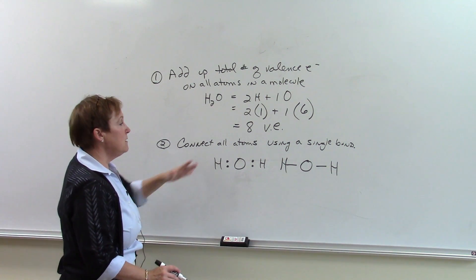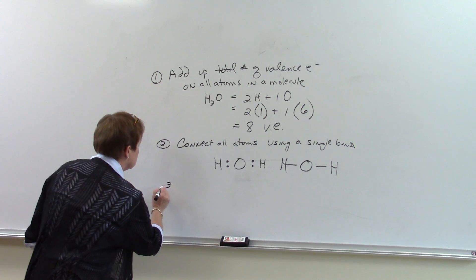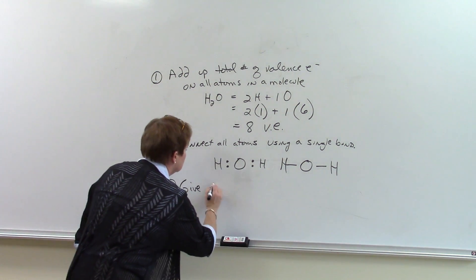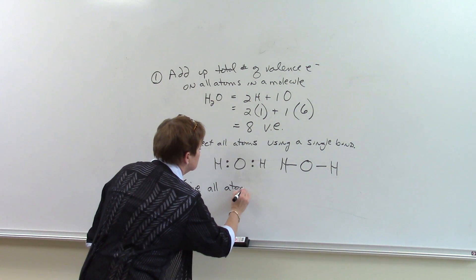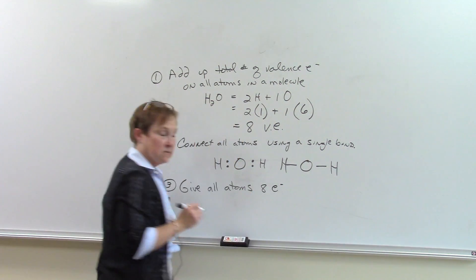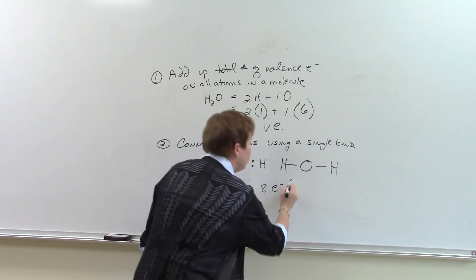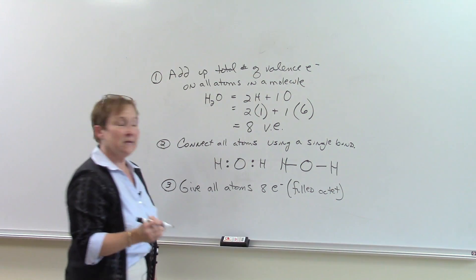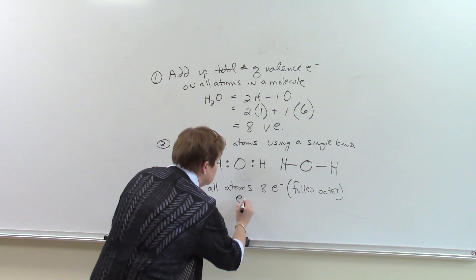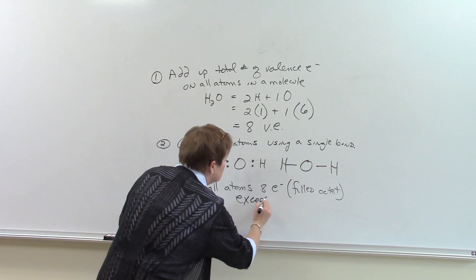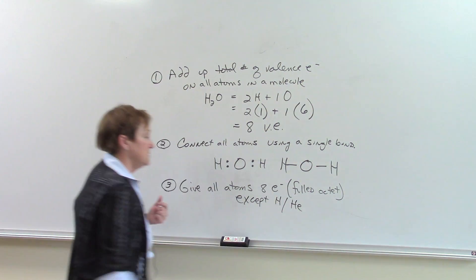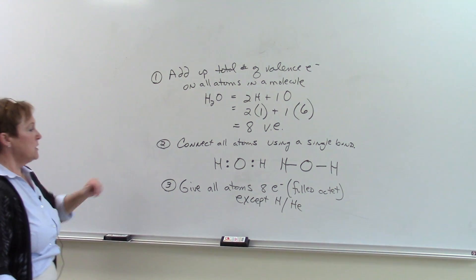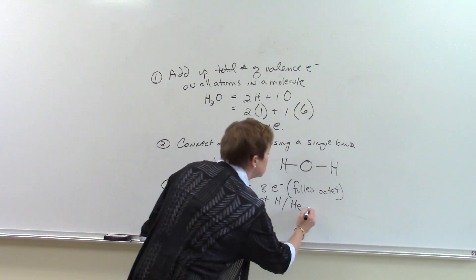After we do that, we go ahead and we give all atoms eight electrons, which we call a filled octet. Except who doesn't get eight? Hydrogen doesn't get eight, and helium doesn't get eight. Why not? No p orbitals, only s orbitals. So they're happy with two.